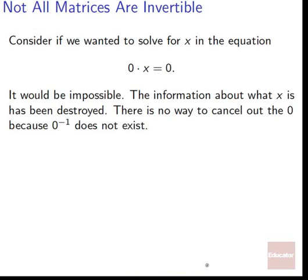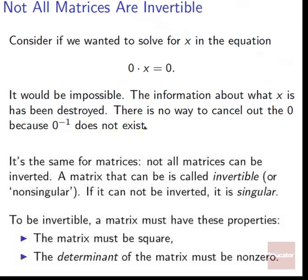Not all matrices are invertible. Consider solving for x in the equation 0 times x equals 0 — it'd be impossible. The information about what x is has been destroyed by that zero. Zero multiplied by anything comes out to be zero, so we don't know what x is anymore. There's no way to cancel out zero because zero inverse does not exist. You can't reverse the process of multiplying by zero — the information is lost. The same thing applies to matrices: not all matrices can be inverted.